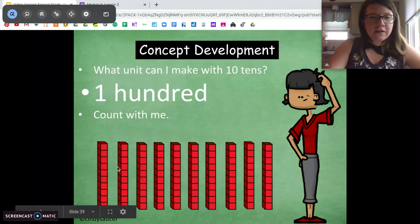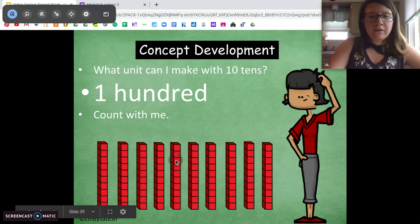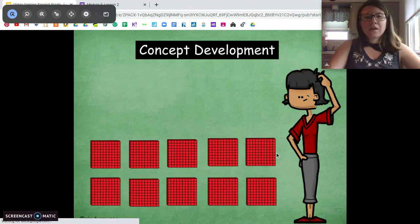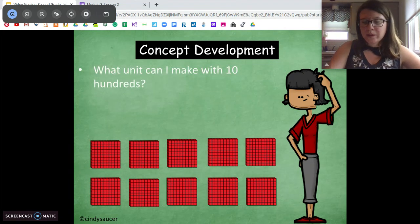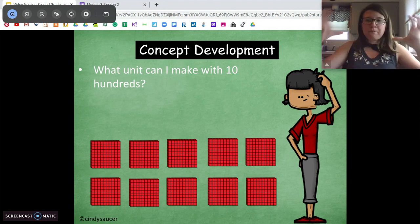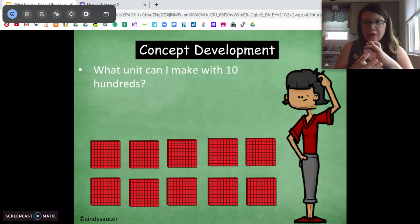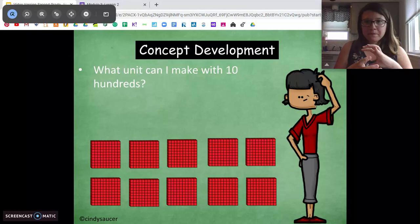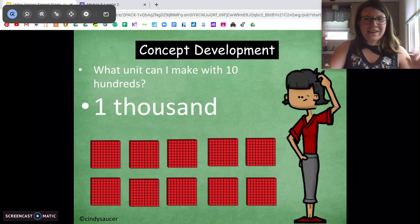Okay. We can count it out. 10, 20, 30, 40, 50, 60, 70, 80, 90, 100. Awesome. What can we do with these 10 hundreds? We learned about this new unit yesterday. If we're going to compile and put all the 10 hundreds together, what is that going to make? 1000. Good job.